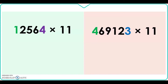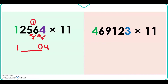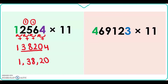Here is 12564 times 11. Write the first and last digits with a space between them. Adding from right: 4 plus 6 is 10, write 0 and carry 1; 6 plus 5 is 11 plus carry 1 is 12, write 2 and carry 1; 5 plus 2 is 7 plus carry 1 is 8, write 8; then 2 plus 1 is 3, write 3. Our answer is 138204.